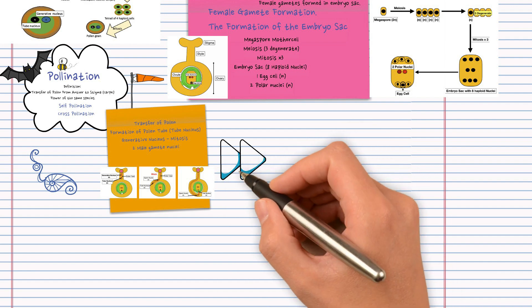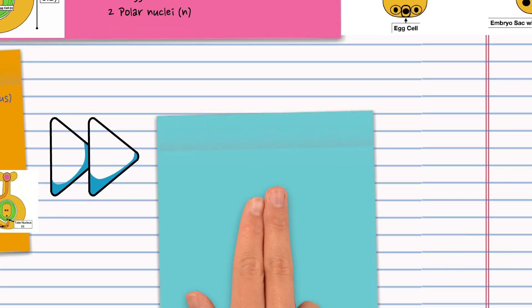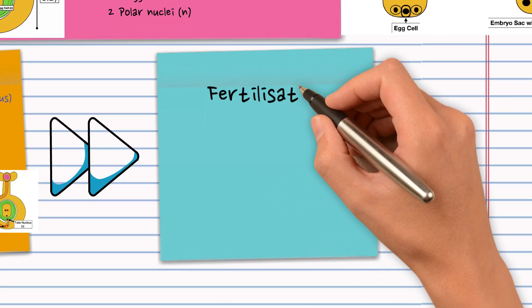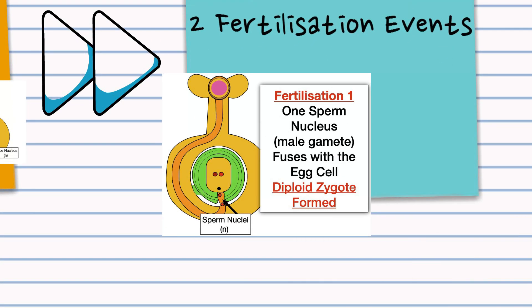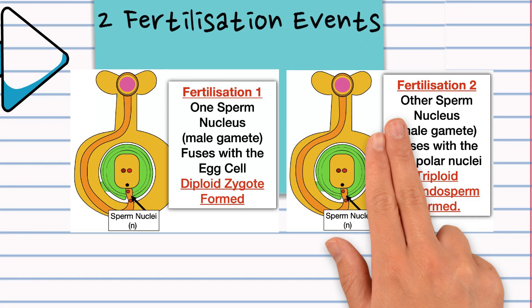So when these male gametes make their way into the embryo sac inside the ovule there are two fertilizations. It's called double fertilization. The first forms the diploid zygote and the second the triploid endosperm.